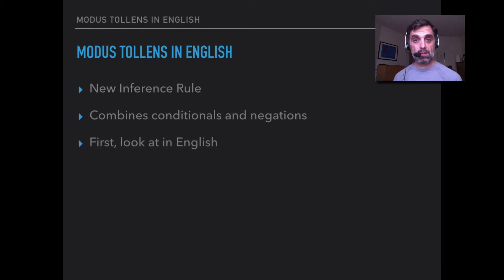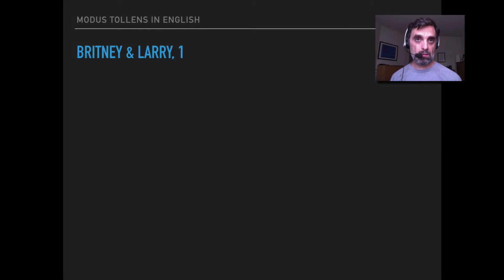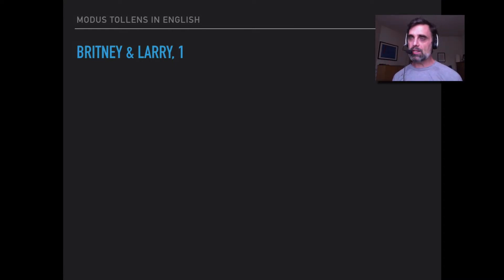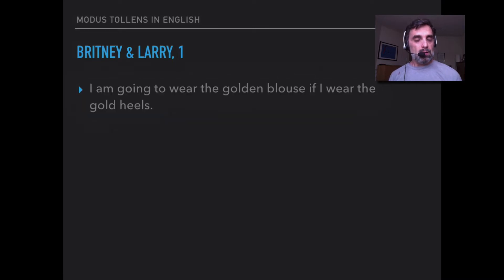First we'll see what modus tollens looks like in English, and then we'll see what this inference pattern looks like in the logical language. It's one you're very familiar with, and just like modus ponens you use it all the time. So imagine you're in the airport, watching CNN, and Larry King is interviewing Britney Spears — or maybe Harvey Levin interviewing Cardi B. Britney's recounting this episode. She says: I'm going to wear the golden blouse if I wear the gold heels.